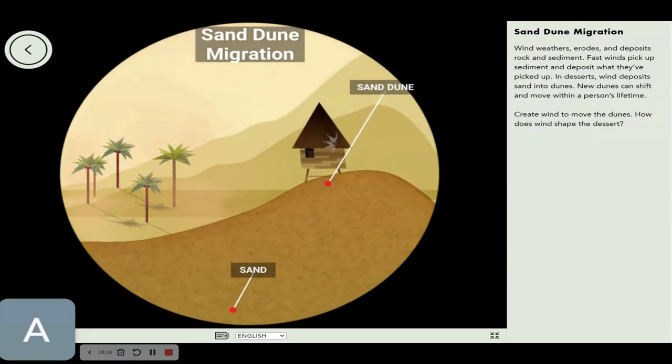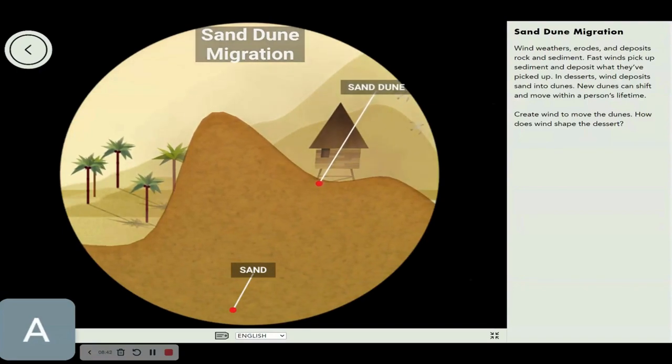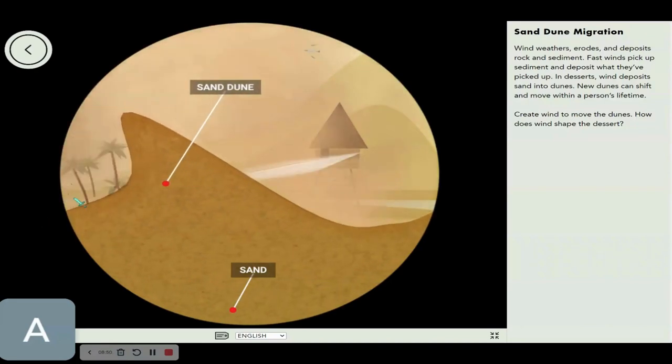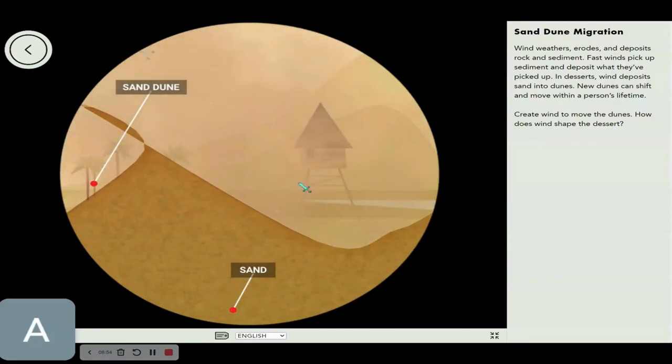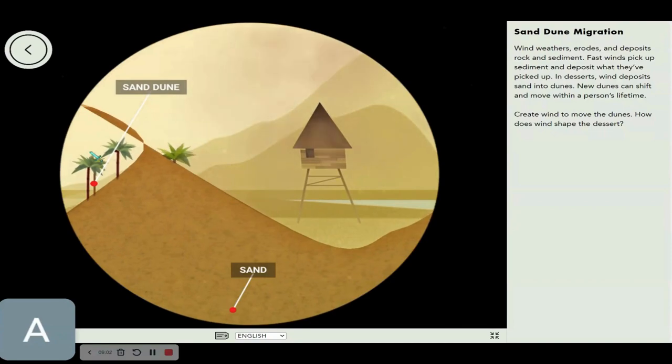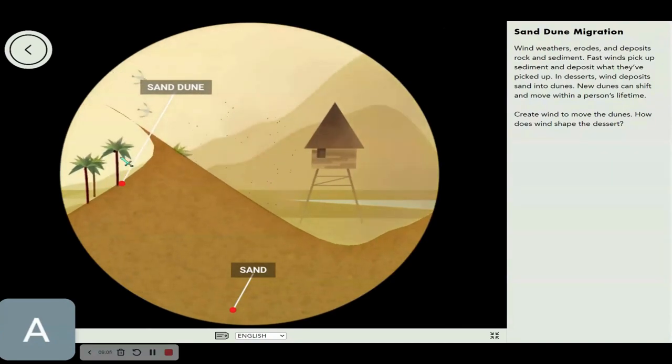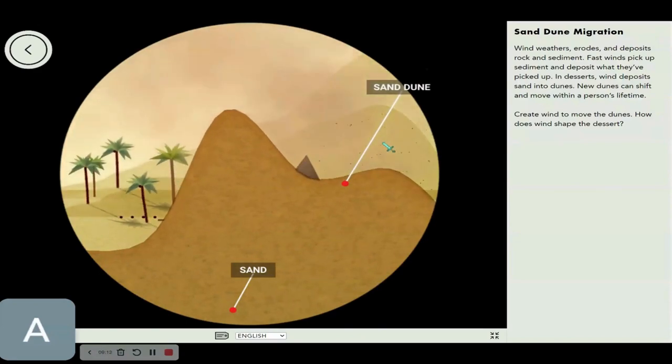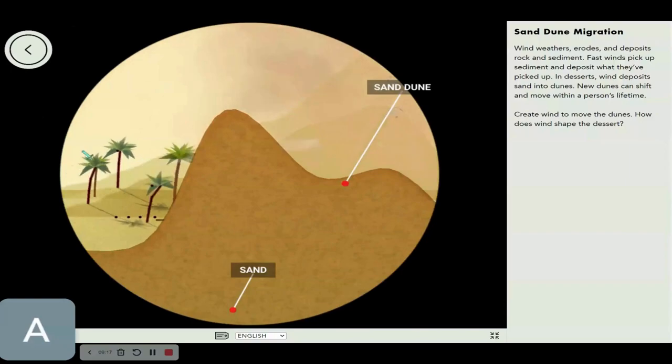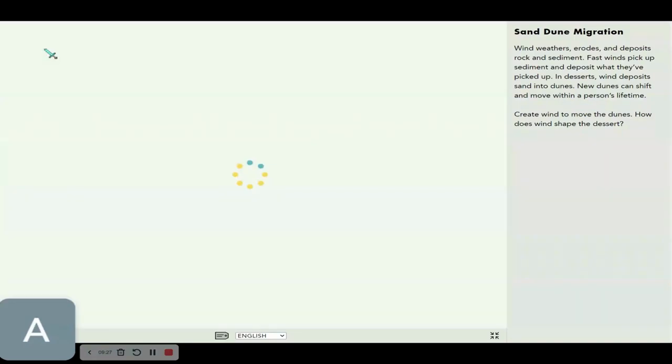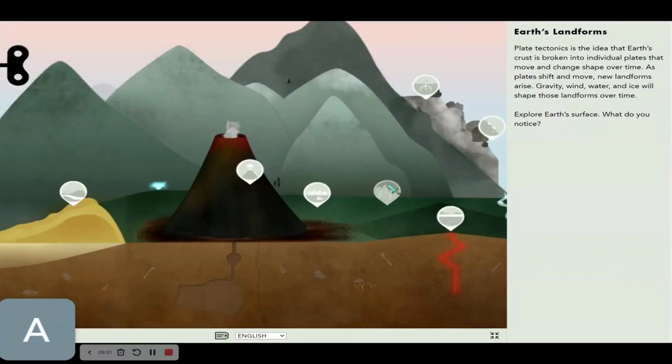Anyways, let's go on to sand dune migration. Wind weathers, erodes and deposits rock and sediment. Fast winds pick up sediment and deposit what they've picked up. In deserts, wind deposits sand into dunes. New dunes can shift and move within a person's lifetime. This is a sand dune, a hill of sand, basically.